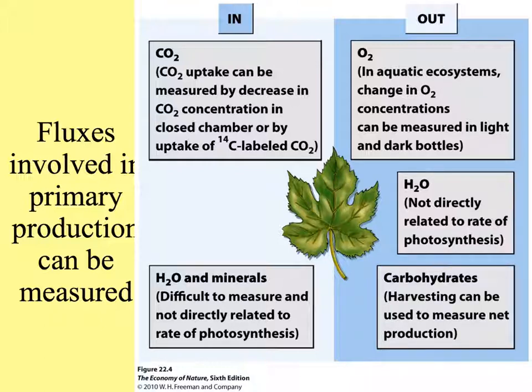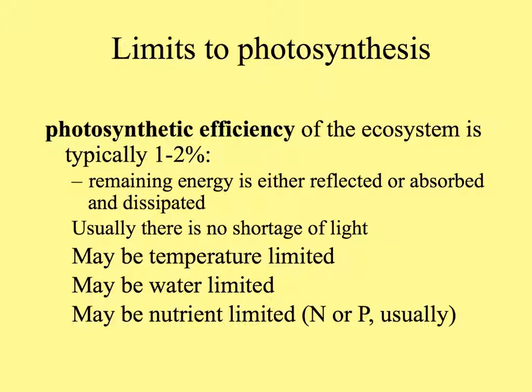For any kind of system, measuring carbohydrates — that is, plant biomass — is a good, direct, simple way. It's surprising to realize that the photosynthetic efficiency of ecosystems is usually only 1% or 2%. An awful lot of the sun's energy is reflected off, absorbed by the earth's surface, or lost. That's not a problem because usually there's no shortage of light.